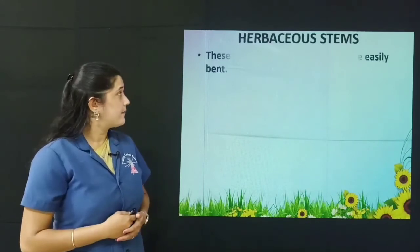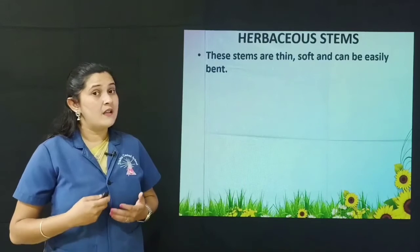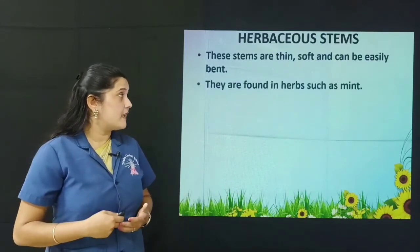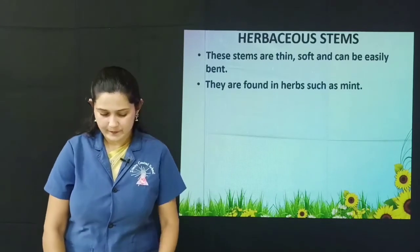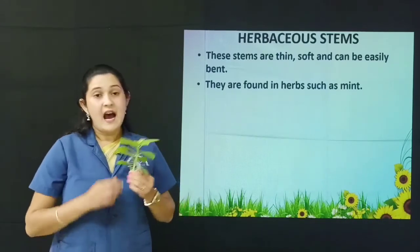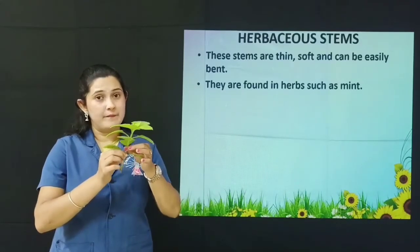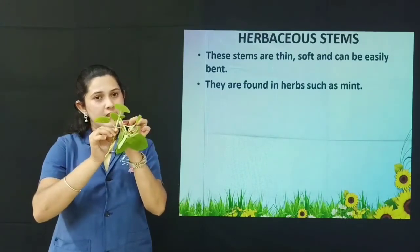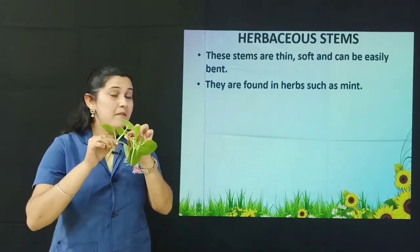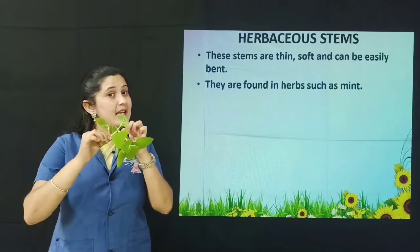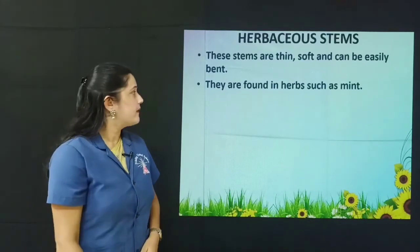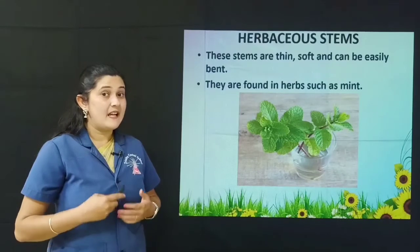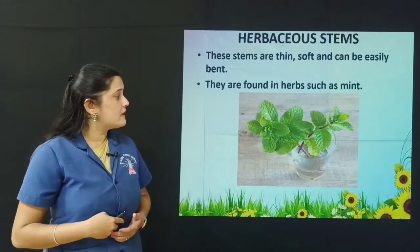Herbaceous stems are thin, soft, and can be easily bent. They are found in herbs such as mint. Here I have the stem of an herb — you can see it is easily bent and can be cut. So herbaceous stems are thin, soft, and can be easily bent.